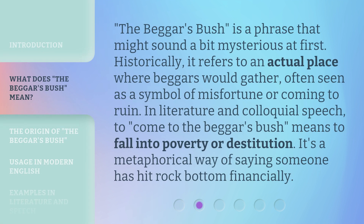The beggar's bush is a phrase that might sound a bit mysterious at first. Historically, it refers to an actual place where beggars would gather, often seen as a symbol of misfortune or coming to ruin. In literature and colloquial speech, to come to the beggar's bush means to fall into poverty or destitution. It's a metaphorical way of saying someone has hit rock bottom financially.